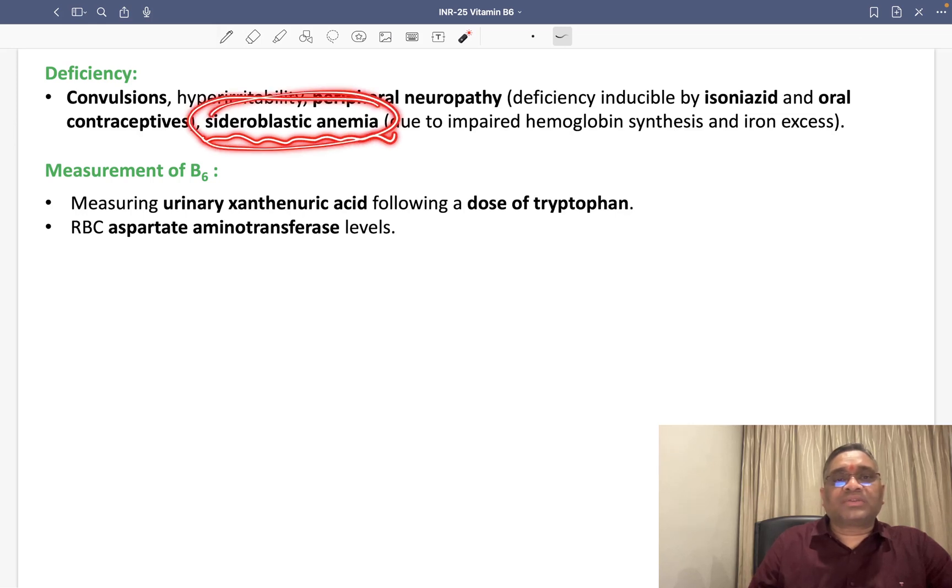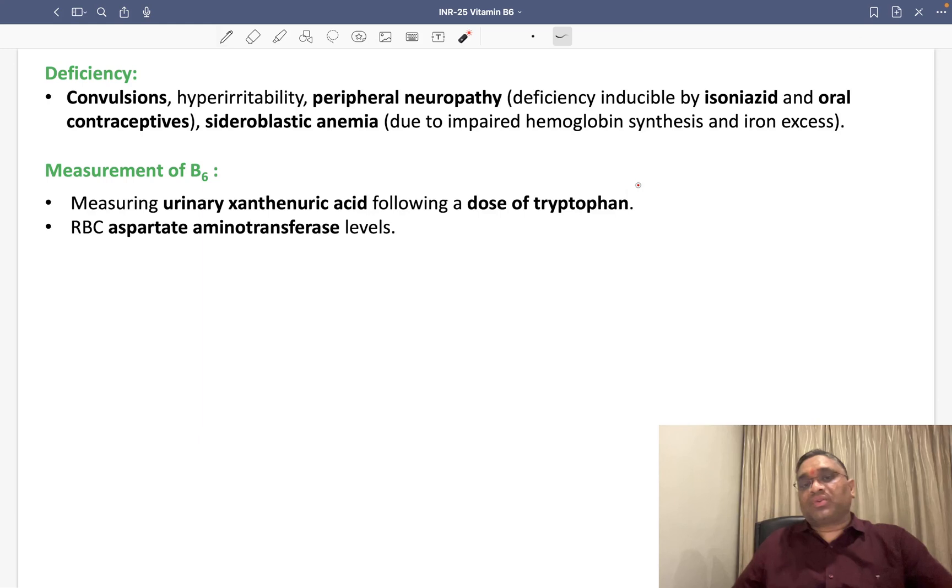That is the anemia which I was talking about. This was the question in INI-CET 2023. How are you going to measure Vitamin B6? By measuring urinary xanthuric acid following a dose of tryptophan. This was the question in the exam. Urinary xanthuric acid is used for estimation of Vitamin B6. It can also be measured by RBC aspartate aminotransferase levels. Best wishes for your exam, keep revising this INR series.